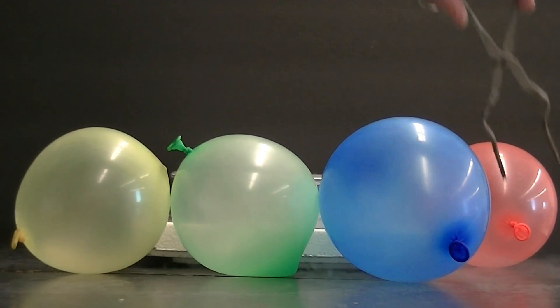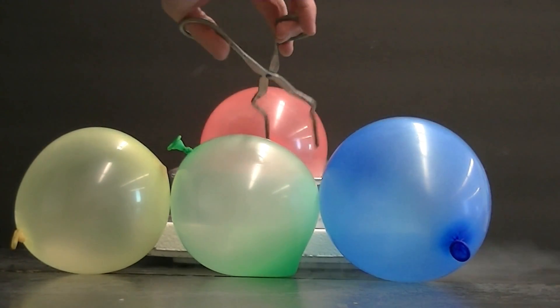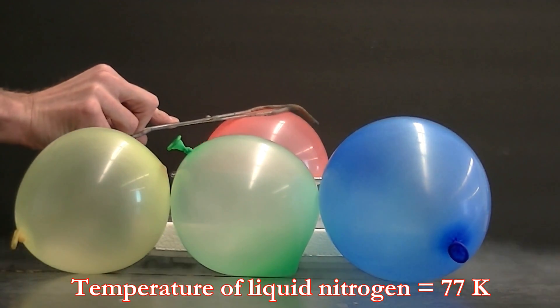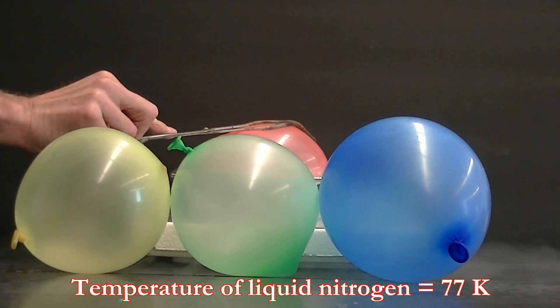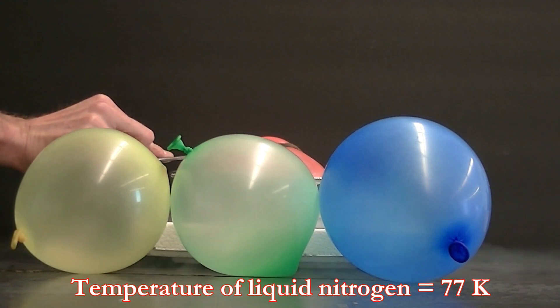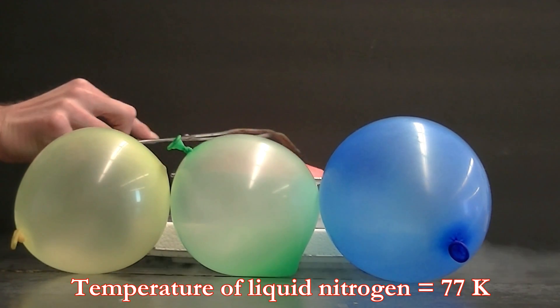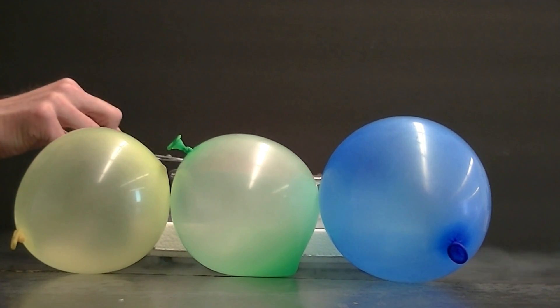I'm taking my balloons, take this orange one, place it in the liquid nitrogen. And as I place that orange balloon in the liquid nitrogen, as you'd expect, as the gas inside the balloon cools, the volume of the balloon shrinks.